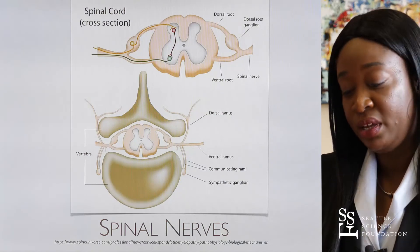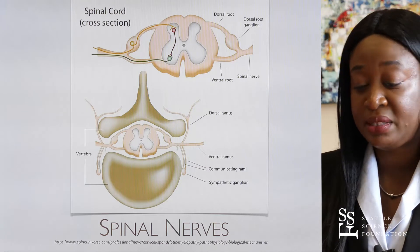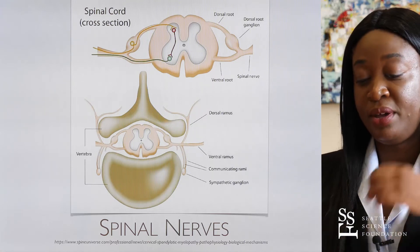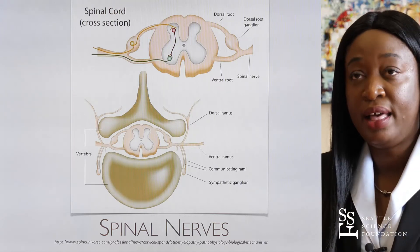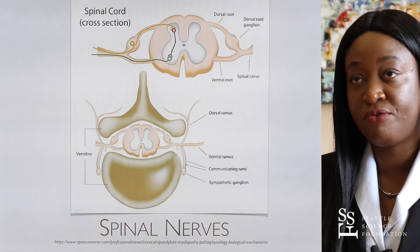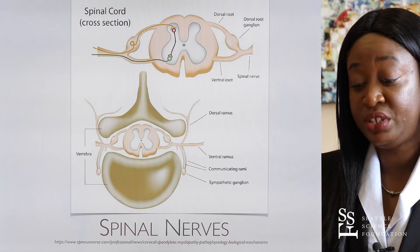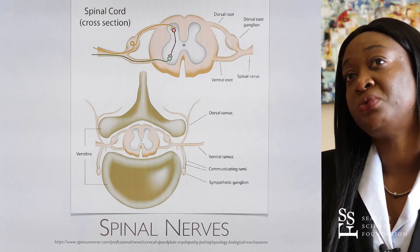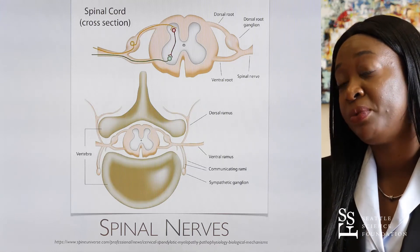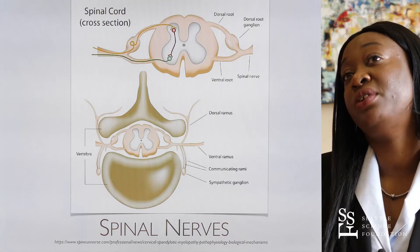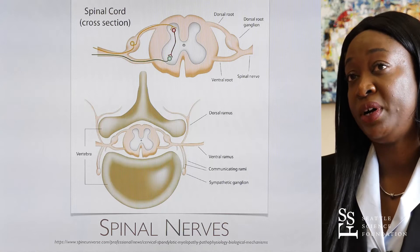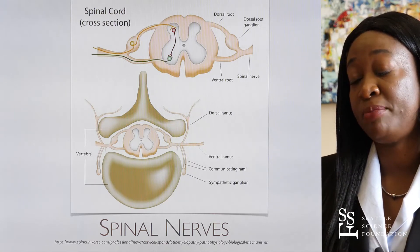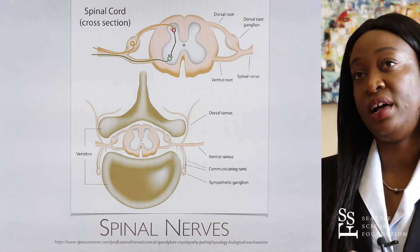There are 31 pairs of spinal nerves: eight cervical nerves, 12 thoracic nerves, five lumbar nerves, five sacral, and one coccygeal nerve. Spinal nerves carry motor, sensory, and autonomic signals between the spinal cord and the rest of the body. They originate from rootlets that converge into both ventral and dorsal roots, which then merge to form spinal nerves that bifurcate into dorsal and ventral rami. The ventral rami supply the anterior lateral trunk and limbs, while the dorsal rami innervate the back muscles and skin of the back for sensory innervation.